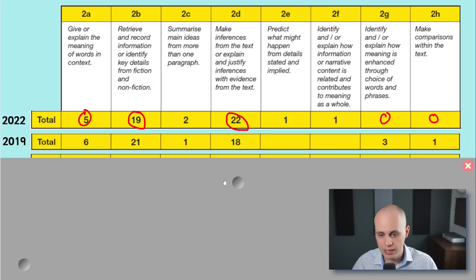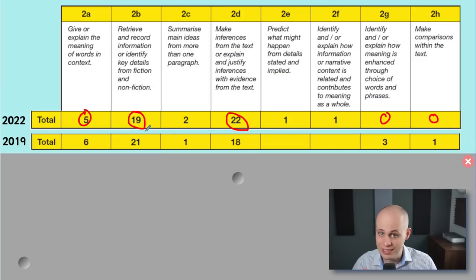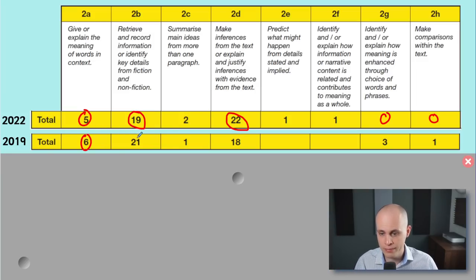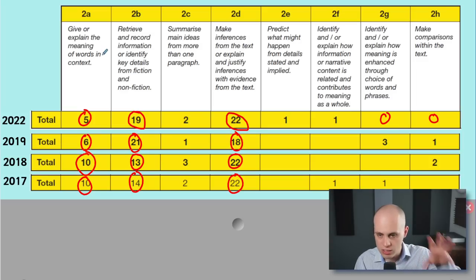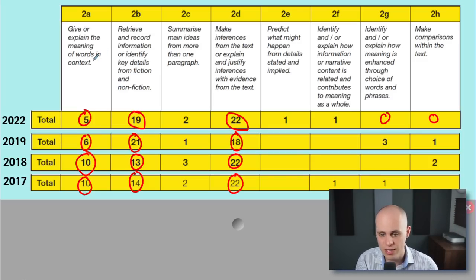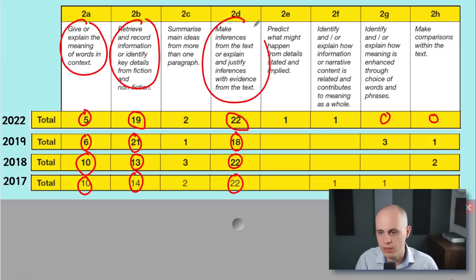If we go back a few years — obviously in 2021 and 2020 there were no SATs because COVID was around and the SATs got cancelled — but look again: word meaning, retrieval, inference. Going back to 2018 and 2017, word meaning was a bit heavier back then, but it's still these three. There were three years in a row without a single prediction question. So if you want to focus before your test, these are the ones you want to focus on: word meaning, retrieval, and inference.